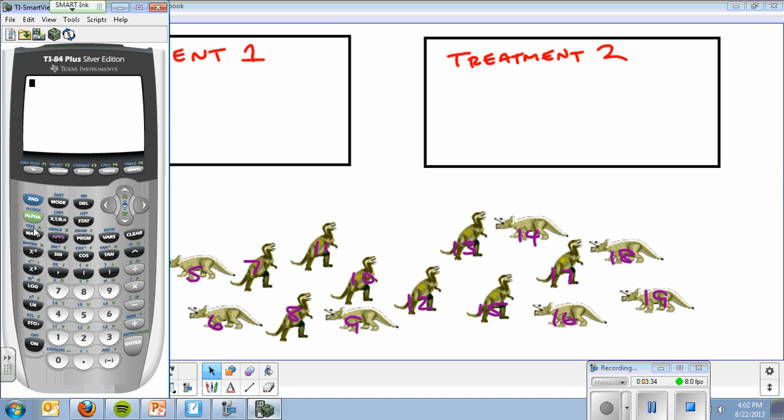You're going to go to math right here. You're going to scroll over to PRB for probability. And you're going to scroll down to number 5, or it might be some other number, but it's random integer or random int. Now, you can shortcut that and just hit 5, or you can hit enter once you scroll down to it. Random int. Low 1, Upper 19. So, I want a random integer between 1 and 19. I get 10.